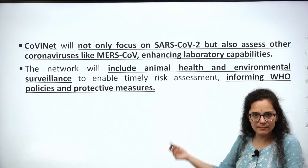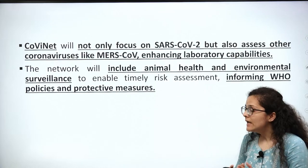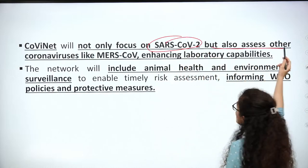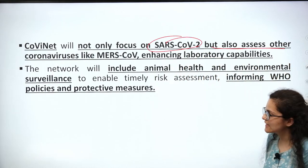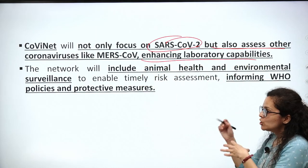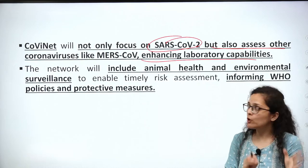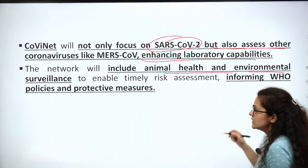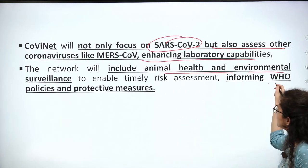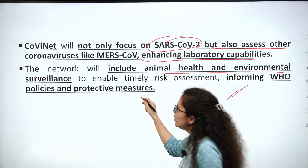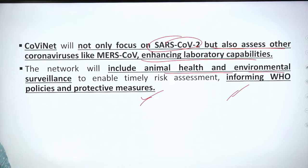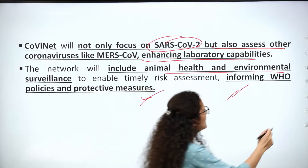COVID-net not only focuses on SARS-CoV-2, but also assists with other coronaviruses such as MERS, and enhances laboratory capacity. This network includes animal health and environmental surveillance, enabling timely risk assessment so that timely protective measures can be taken in line with WHO policies.